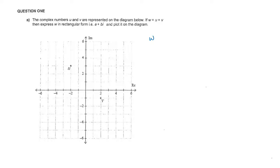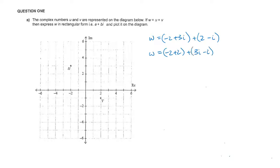So w equals u plus v, so w will equal u which is negative 2 plus 3i, plus v which is 2 minus i. When we're adding complex numbers together we add the real parts — negative 2 plus 2 — and imaginary parts — 3i minus i — which gives us 2i. We have to plot that on the Argand diagram, so I'm going to plot it there at 2i.